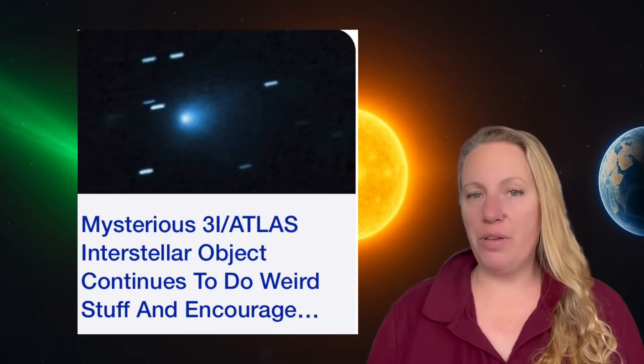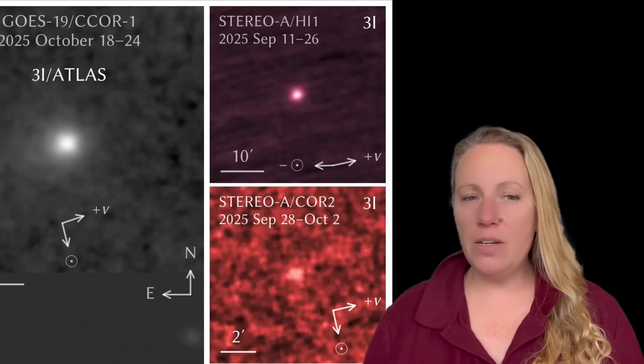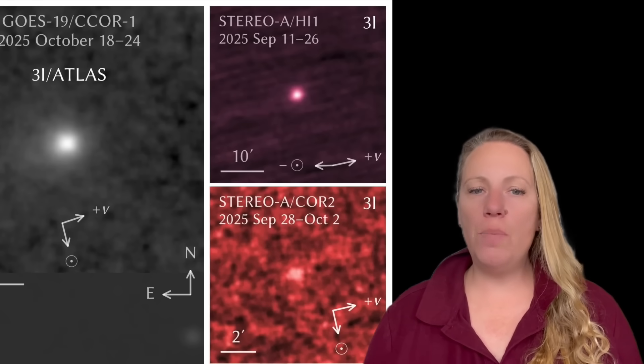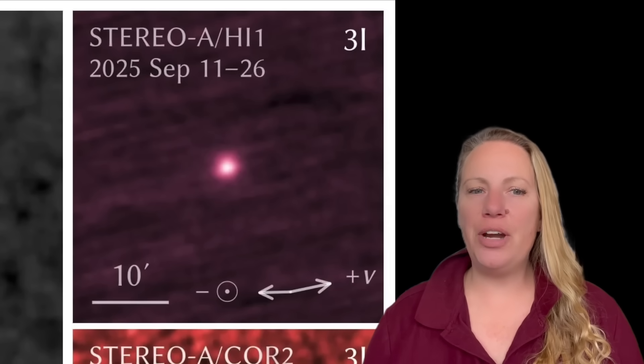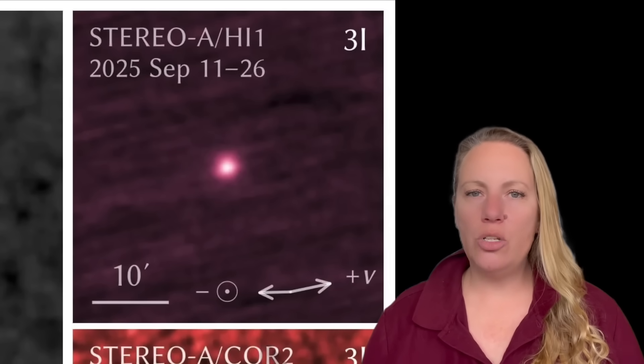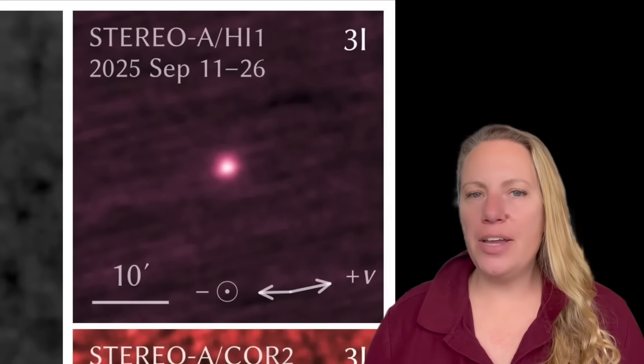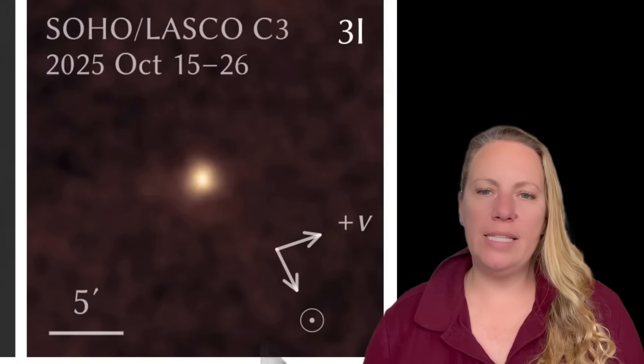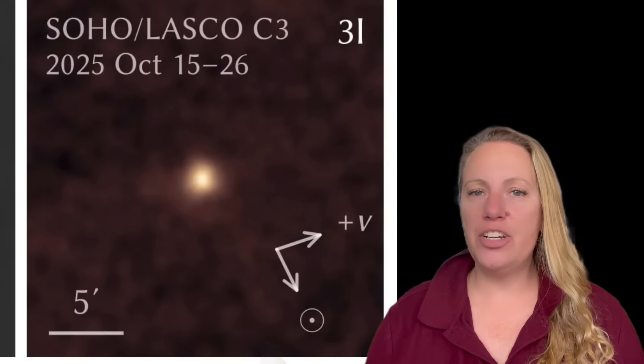It's moving very fast. Its incoming speed is far higher than typical solar system comets. It shows a coma, a gas-like envelope around the nucleus, and significant water-ice features. For example, observations show a coma dominated by CO2 with a very high CO2-H2O ratio, about 8.8 to 1, remarkably higher than typical comets from our system that we know.